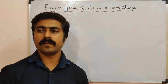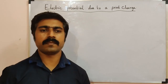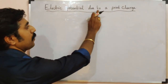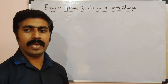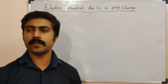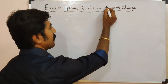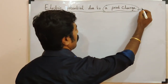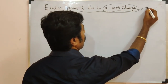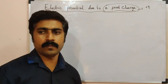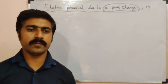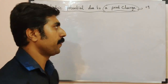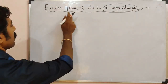Hi students, today we are going to discuss the topic: electric potential due to a point charge. A point charge means only one single point charge. That is plus Q — if you have a positive charge, it is plus Q.